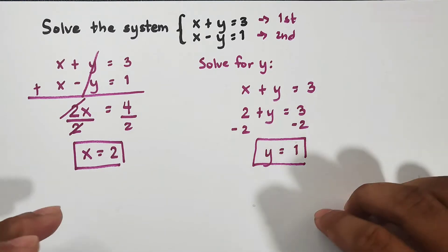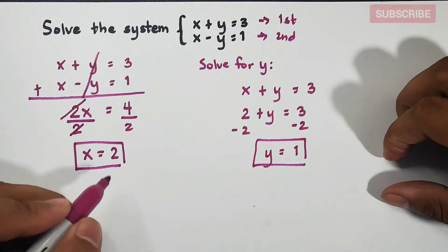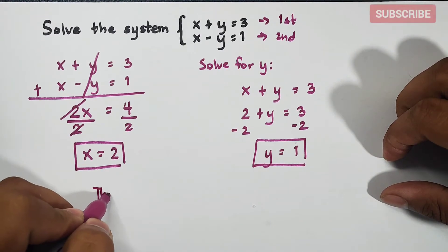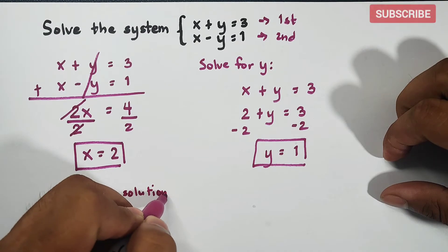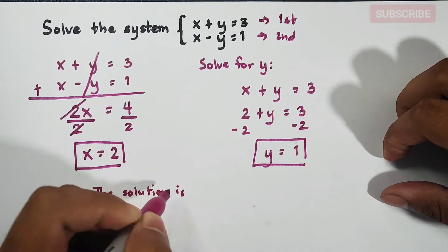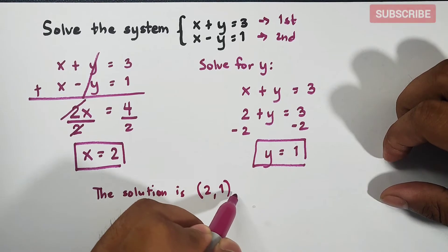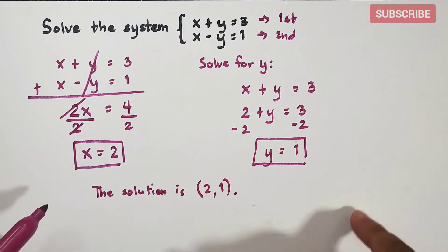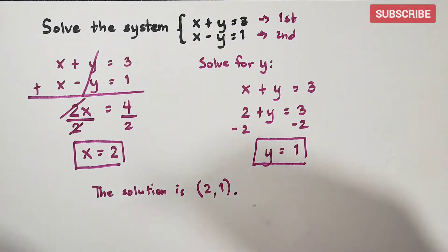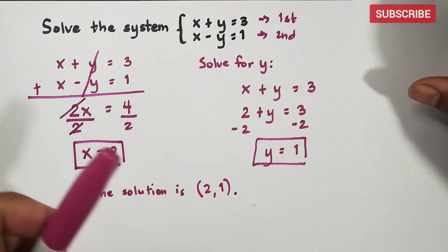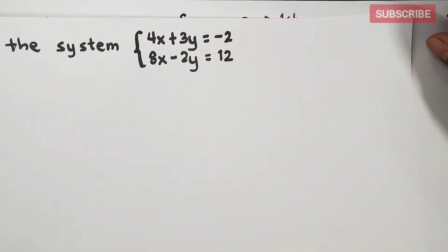So we have x equals 2 and y equals 1, and the solution is (2, 1) — where 2 is your x and 1 is your y. I hope the first example was clear. Let's move on to a more complicated example.